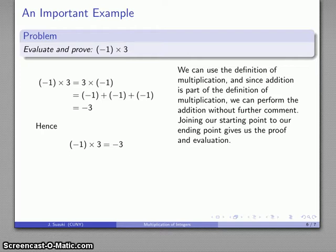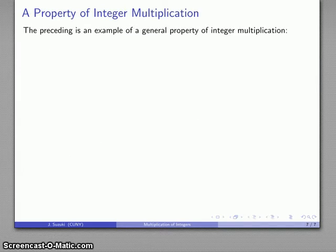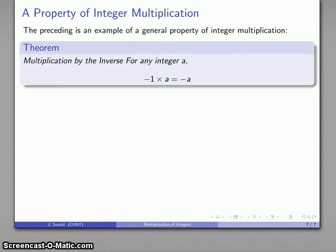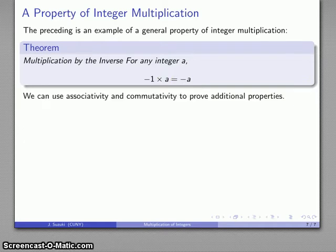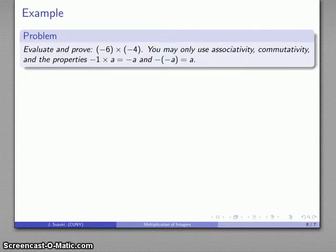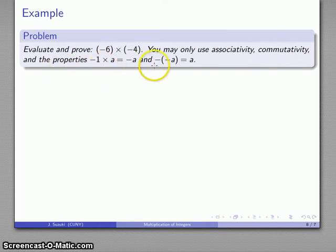The preceding is an example of a more general property of integer multiplication. In general, if I multiply by the value negative 1, for any integer a, negative 1 times a is going to be the same as negative a. Combined with associativity and commutativity, we can use this to prove additional properties. For example, evaluate and prove negative 6 times negative 4, using only associativity, commutativity, the property that negative 1 times a equals negative a, and the property that negative negative a equals a.